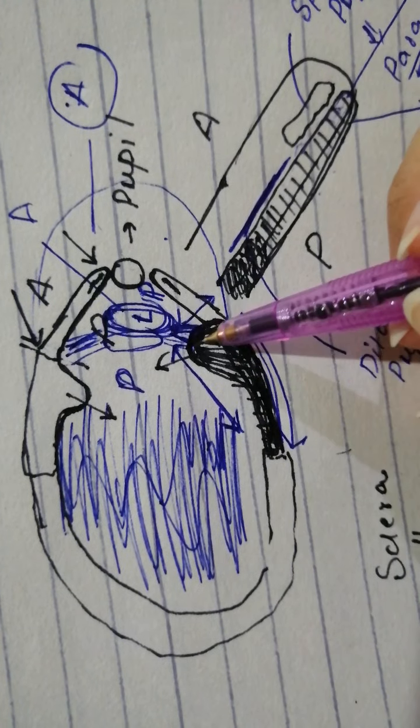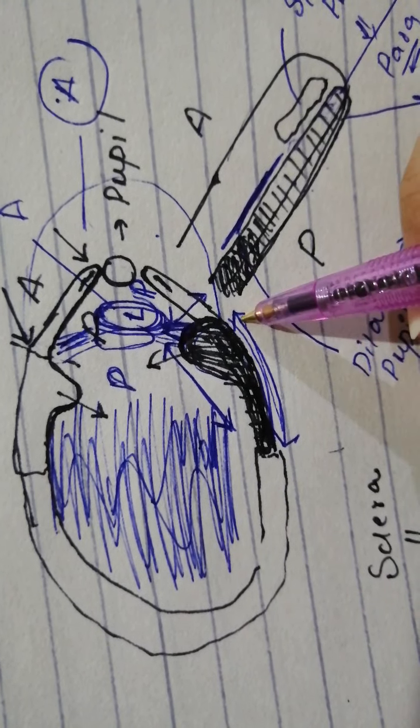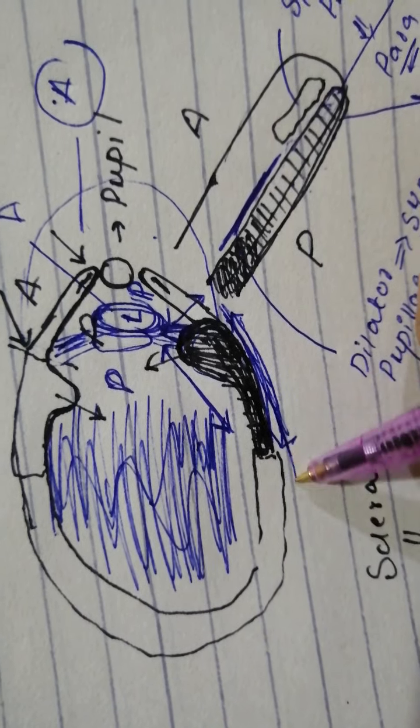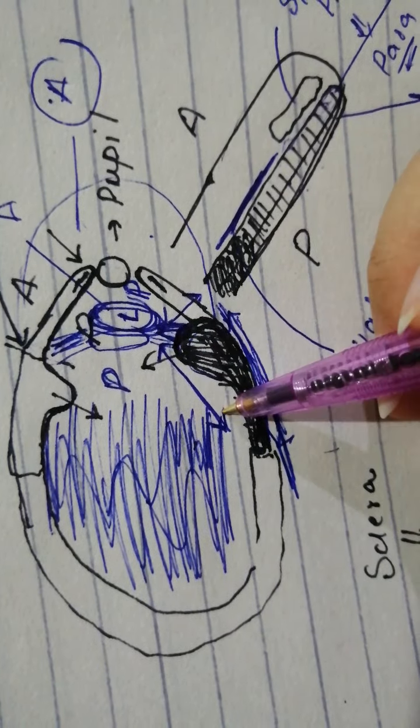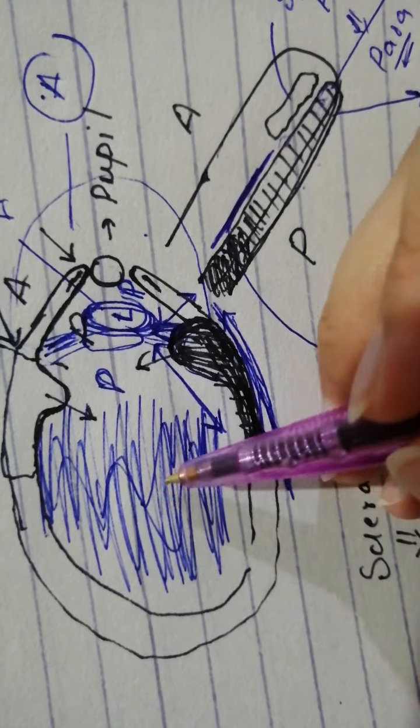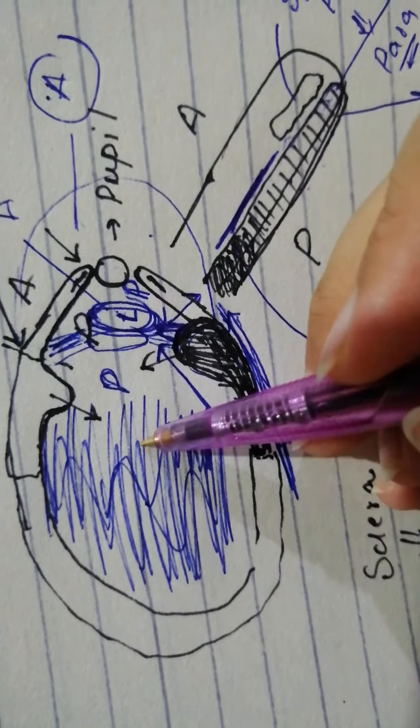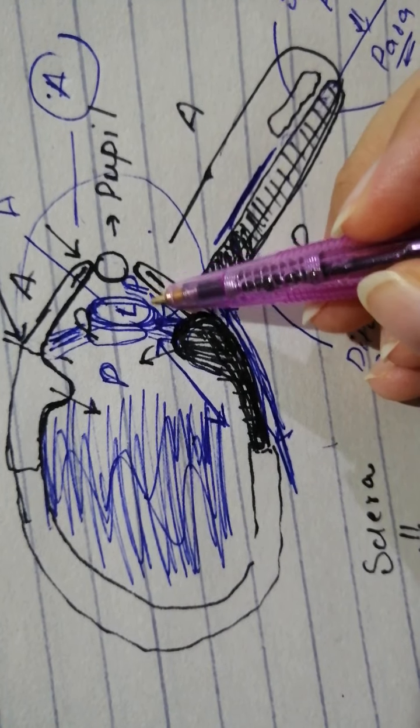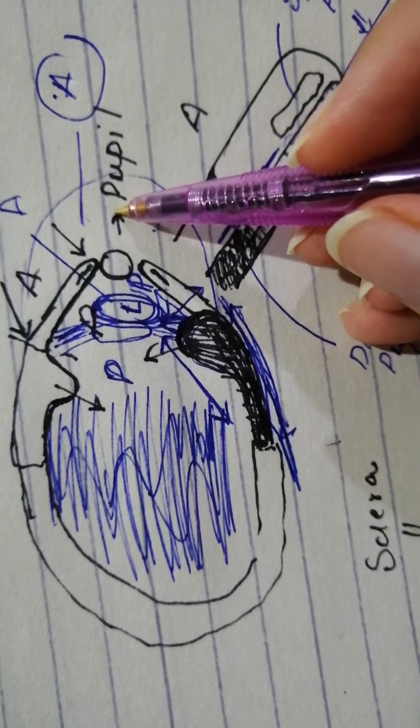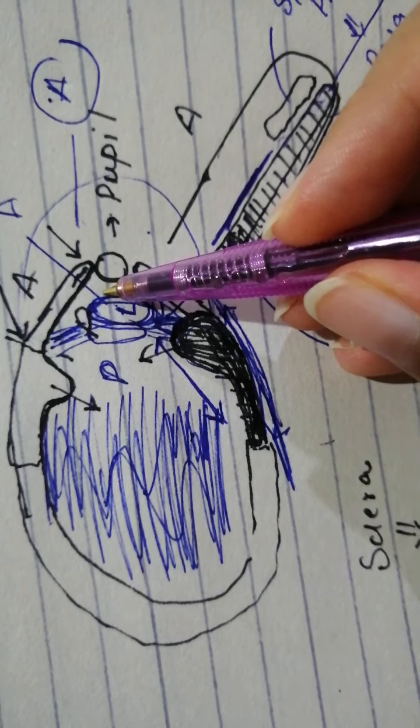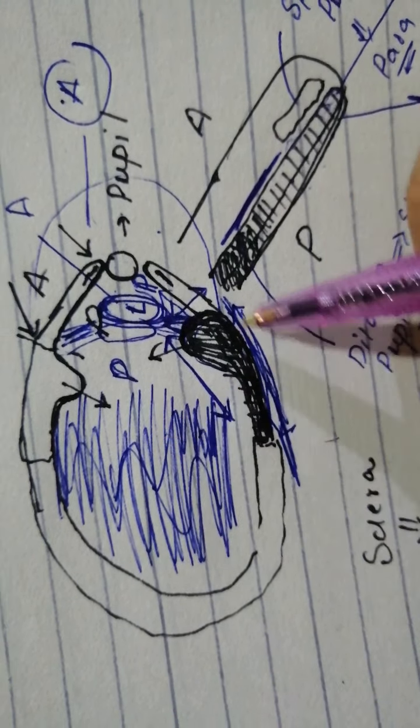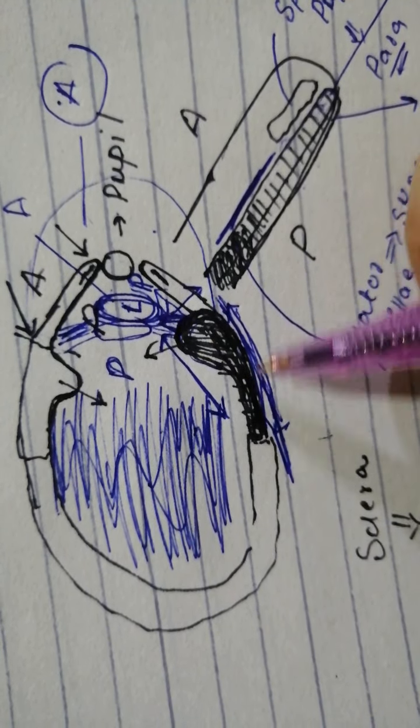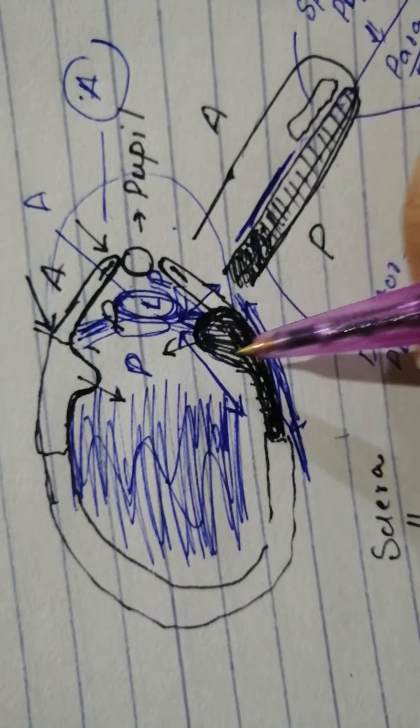So this is the ciliary body over here. This is its outer surface which fuses with the sclera if it was shown. It has its inner vitreous surface which faces the vitreous body because the part behind the lens is the vitreous body and it has an anterior surface which is facing the posterior segment. This is the anterior segment, this is the posterior segment and this is the vitreous body. So I'm hoping this made some sense about the ciliary body which is actually triangular in cross section.